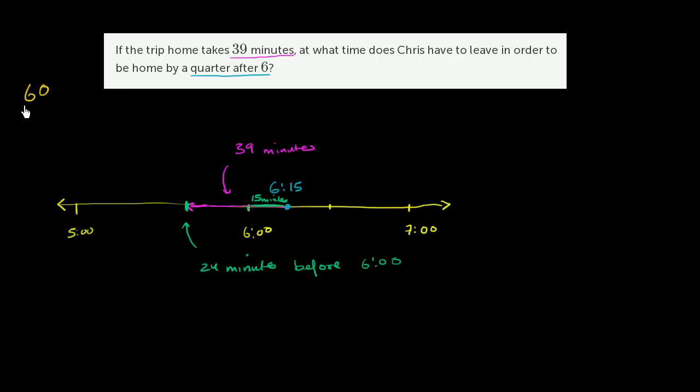So 60 minus 24 is equal to 36. And you could either do that in your head, or you could say, I could maybe borrow here. This is a 10. This is a 5. We'll regroup. 10 minus 4 is 6. 5 minus 2 is 3.